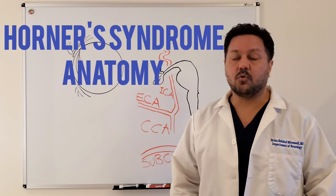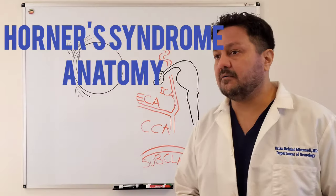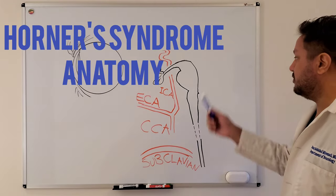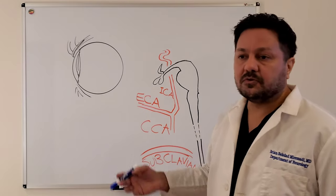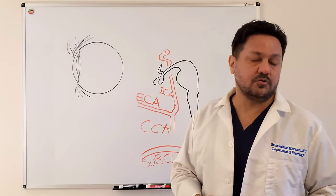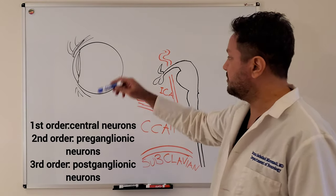We are talking about Horner's syndrome, its anatomy, and its presentation depending on the location of the lesion. To understand Horner's syndrome, we need to know that there are three orders of neurons contributing to the sympathetic nervous system of the head and neck.